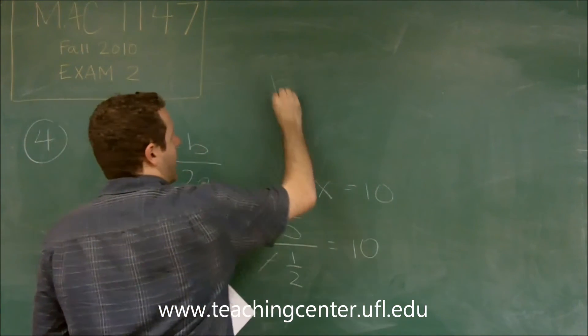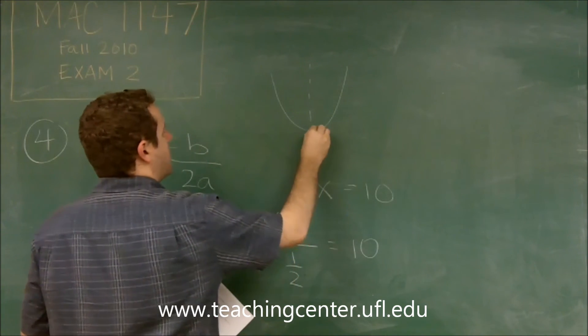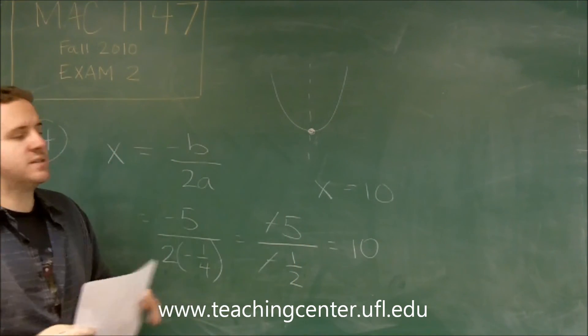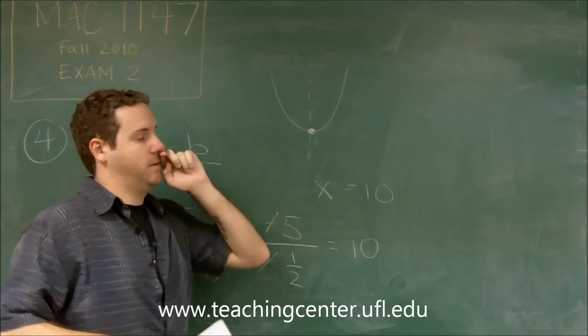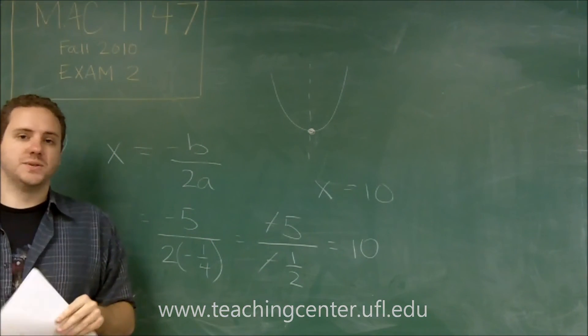Because if you think about it, on your parabola, that's the x value where the vertex occurs. That's also your axis of symmetry since your parabola is symmetric on either side of that. So we have x equals 10 for this one.